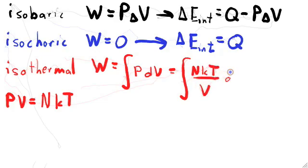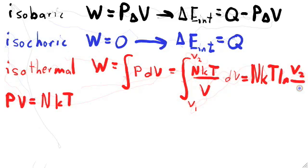Now let's actually evaluate this integral, starting from some initial volume V1 and ending with some final volume V2. Since NKT is constant for this process, that just comes out as a factor in the front, and we find that the work is NKT times the natural log of V2 divided by V1.